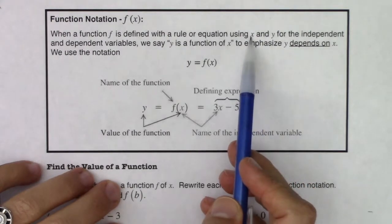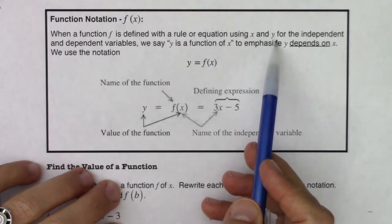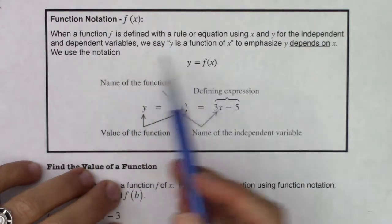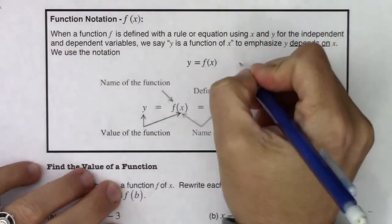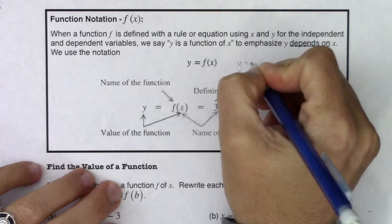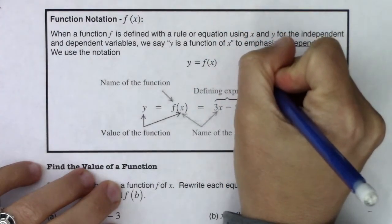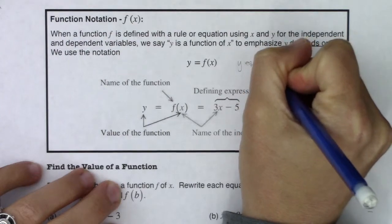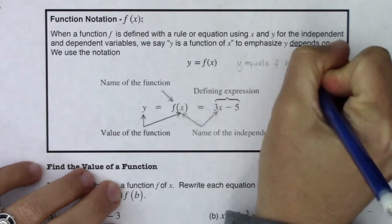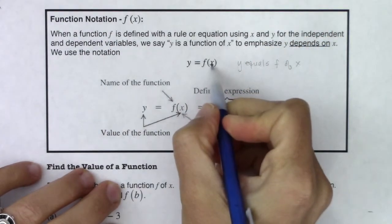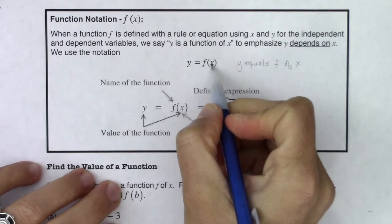We pick our x, based on our x we figure out what y is equal to, and we use the notation y equals f of x. If I say this out loud it would be y equals f of x. This is not multiplication, this is what we call function notation.